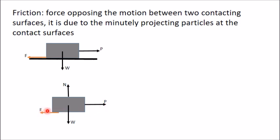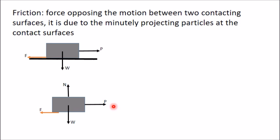In normal condition, when the value of P is very small, the friction force will be equal to P. If you keep on increasing value of P, F will also increase, but there is a limitation — F cannot increase arbitrarily. After some point F reaches its maximum possible value, and after that if you increase P, this block will start moving and accelerating towards the direction of P.